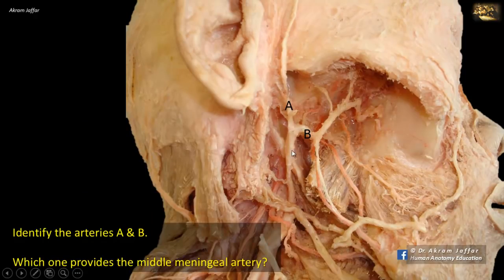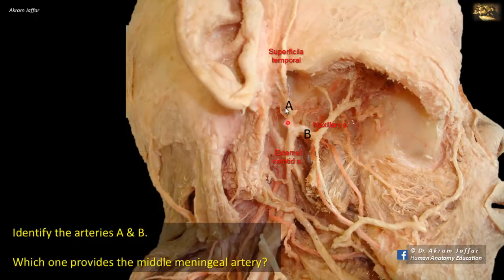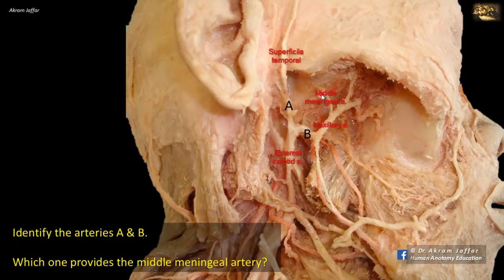Identify the arteries A and B. These are the terminal branches of the external carotid artery. A is the superficial temporal artery, which continues on the surface of the scalp in front of the tragus of the ear. B is the maxillary artery, which passes deep, medial to the neck of the mandible. With the ramus and angle of the mandible removed, we can see the infratemporal fossa. The maxillary artery provides the middle meningeal artery, which passes through the foramen spinosum to reach the middle cranial fossa and is the main artery supplying the meninges.